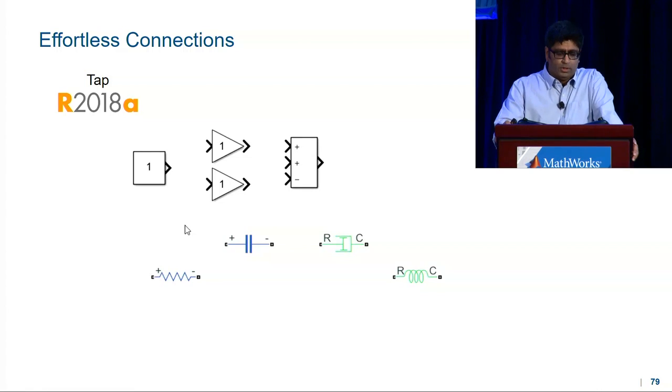When I tap on a port, all the ports that I can connect to are highlighted. When I hover over any of these ports, I can see the preview. I can tap on the port or the preview to make a connection.